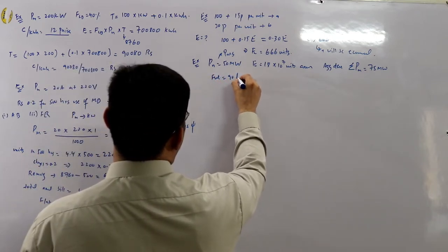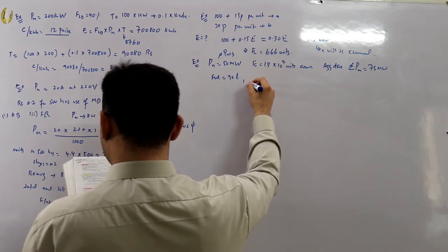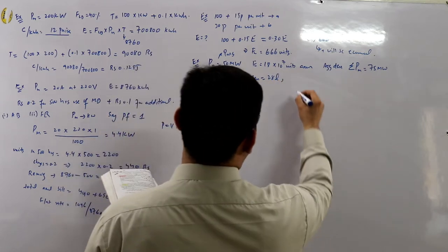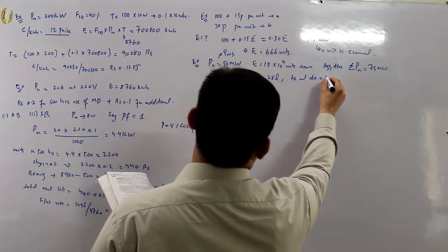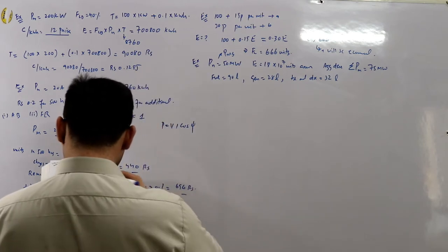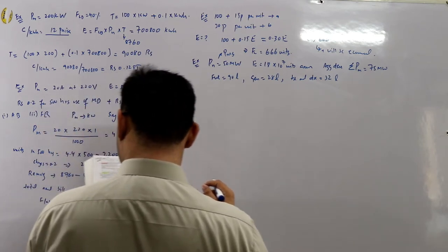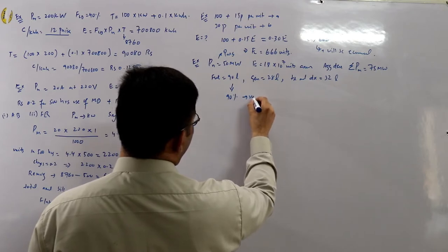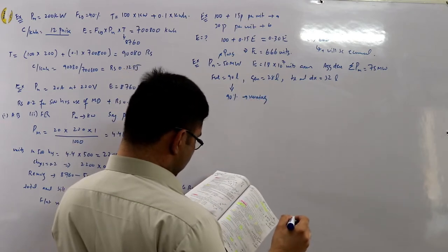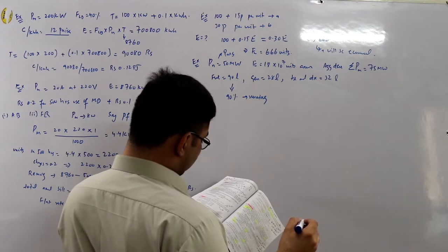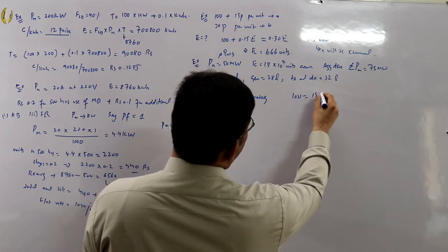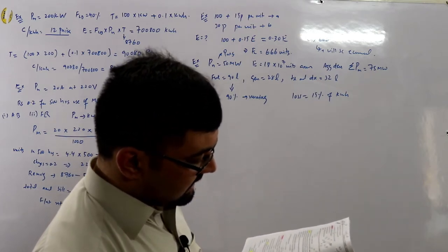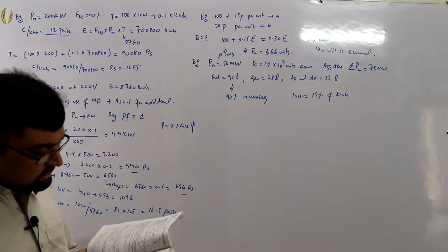Annual expenses: fuel — 90 lakhs; generation — 28 lakhs; transmission and distribution — 32 lakhs. 90 percent of fuel is in running charges. Loss in transmission/distribution is 15 percent of kilowatt hours generated. Deduce a two-part tariff and cost of supply.